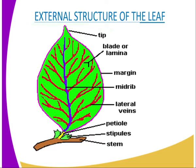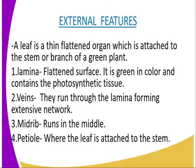The midrib is a larger vein because it runs at the center and has several functions which we shall see as we go by. We have the petiole, which is attached at the lower end to the plant — as you can see we have the stem. We also have the stipules, which are at the base of the leaf.